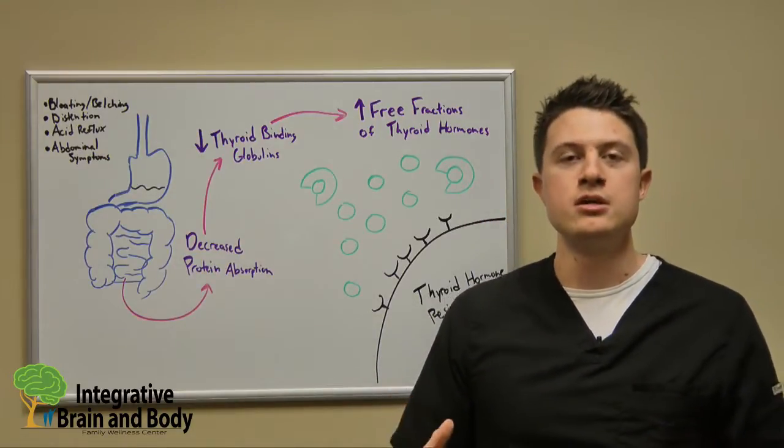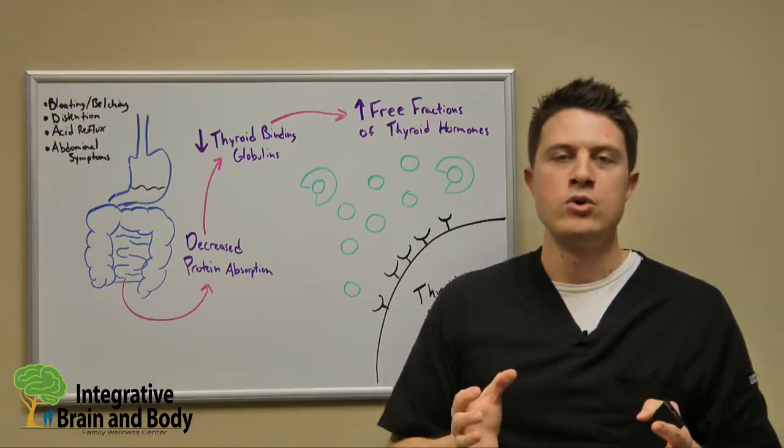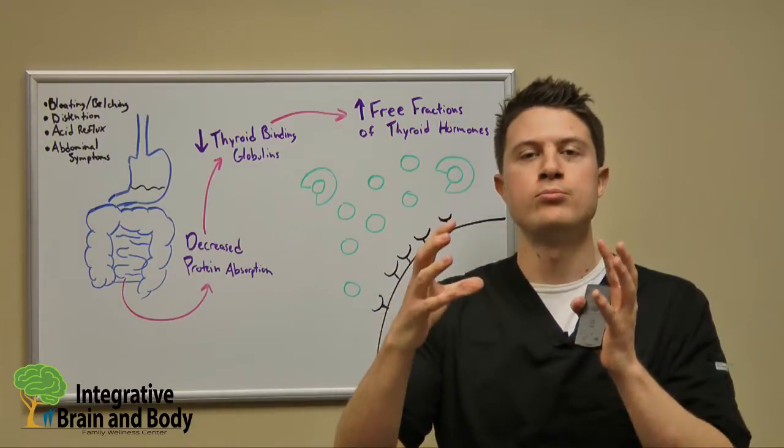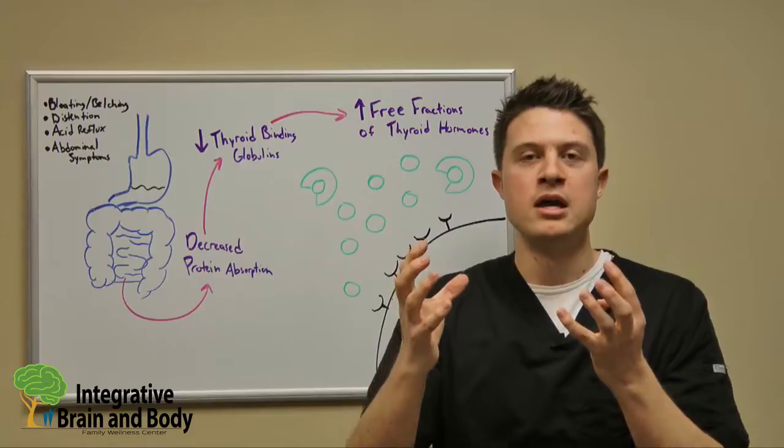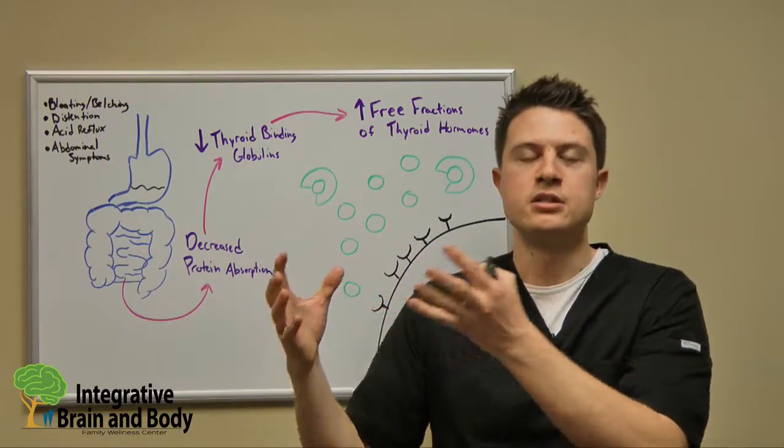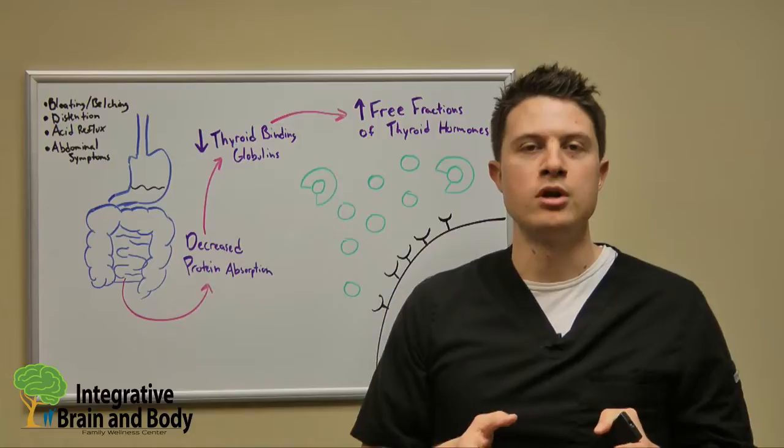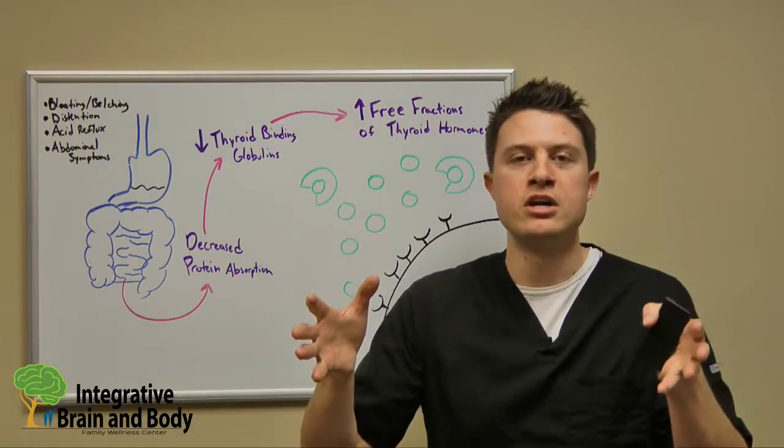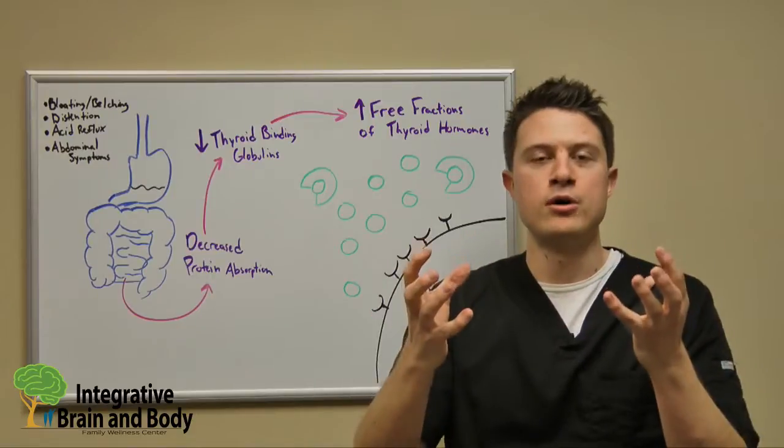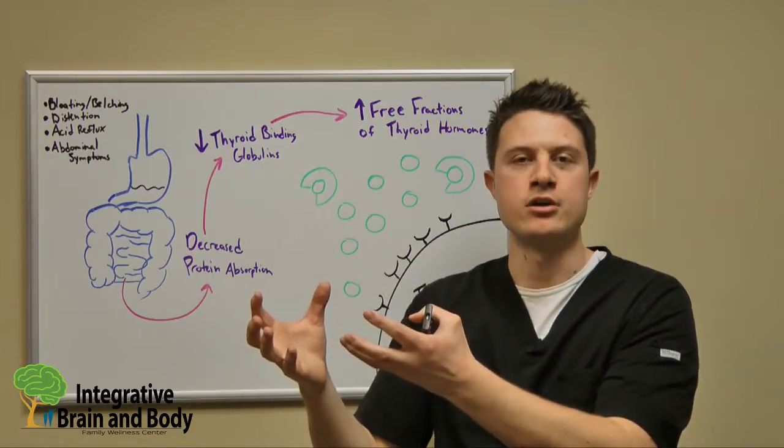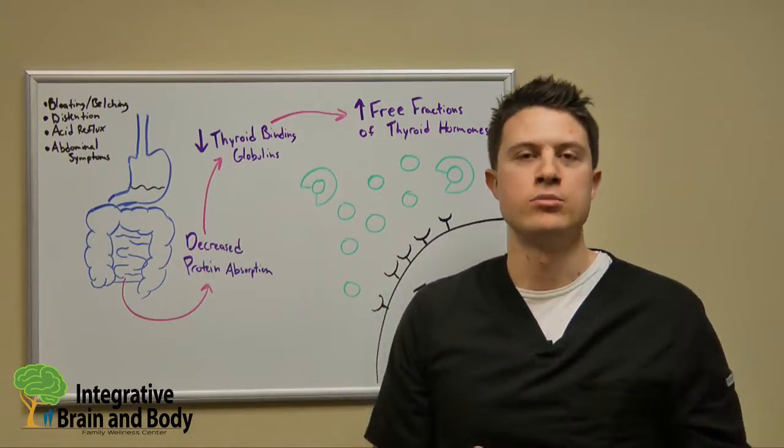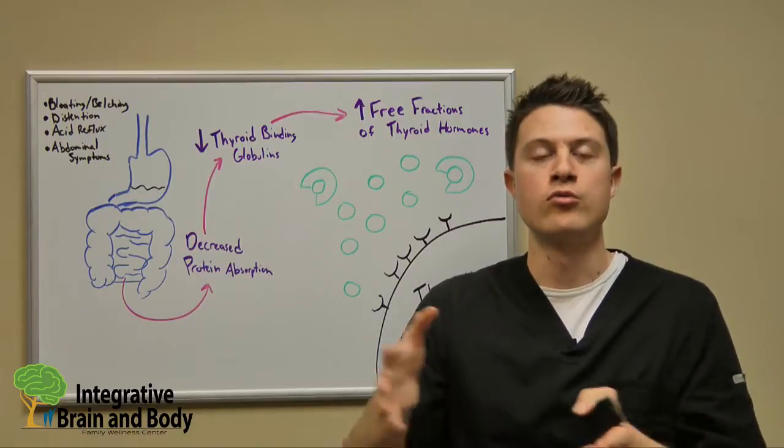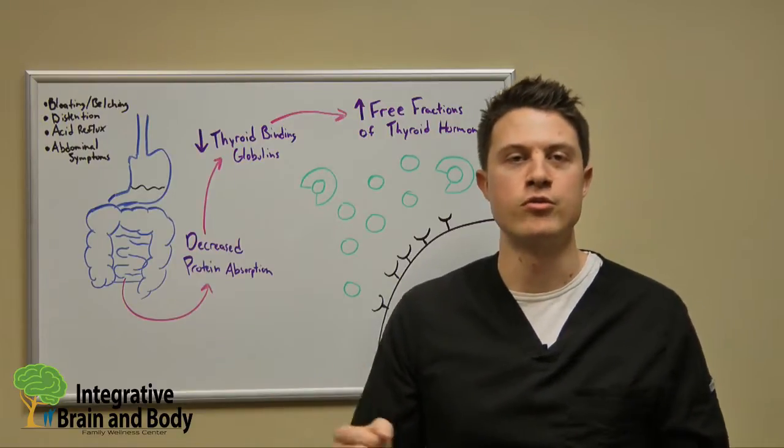When it comes to hormones, we have both protein bound, so they're like locked up, and then we have free fractions of the hormones. If you've ever gotten your blood work done, your thyroid hormone checked, and they measured total T4, they're measuring both protein bound or locked up and the free fraction. There's other things that you can measure called free T4 or free T3 that tells you the free fraction.